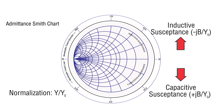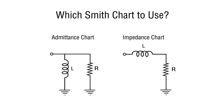So, how do you know whether to use the admittance Smith chart or the impedance Smith chart? It depends on how you want to combine resistors, capacitors, or inductors. If you're combining elements in parallel, you want to use the admittance chart — because to combine two admittances in parallel, you just add their admittance values. Similarly, if you're combining elements in series, you want to use the impedance chart, since the combination of two series components is the sum of their impedances.